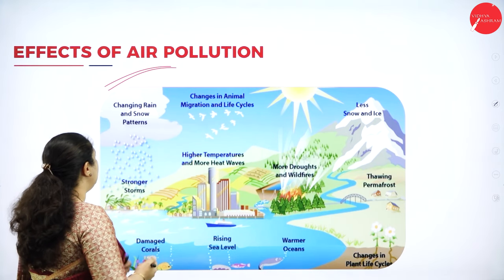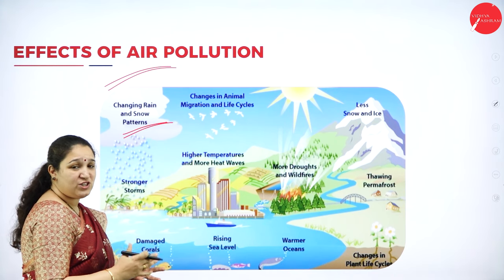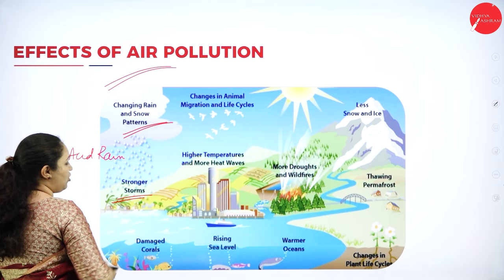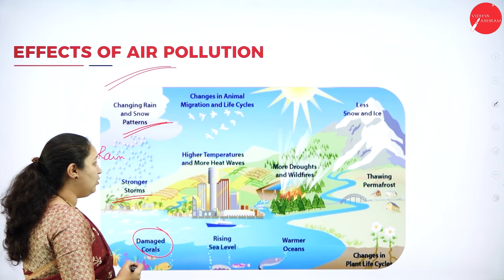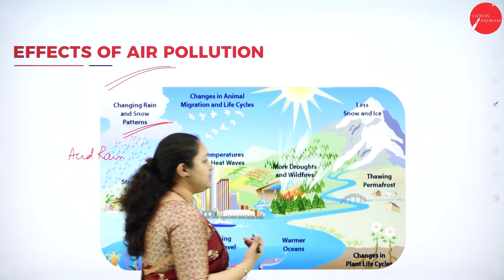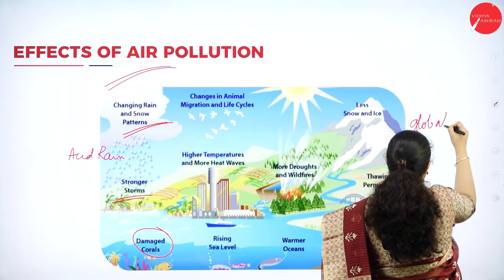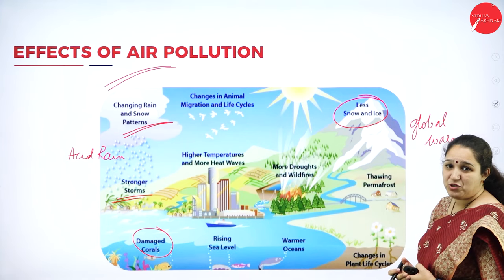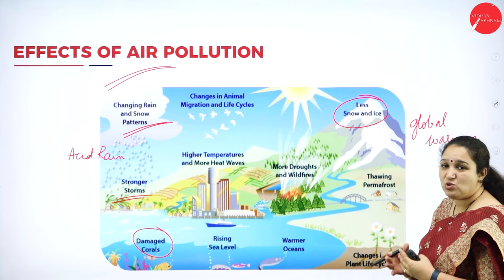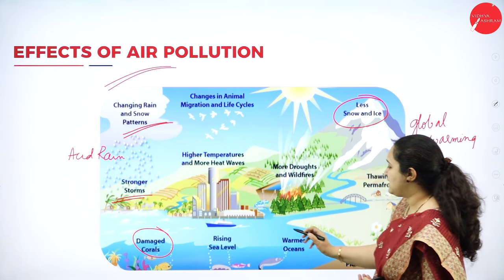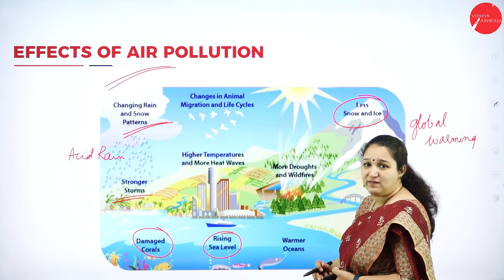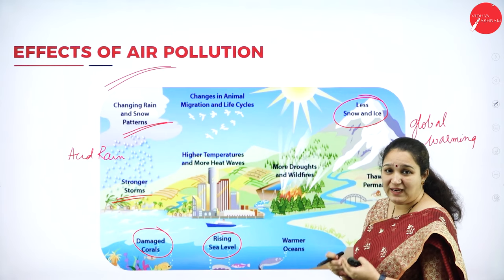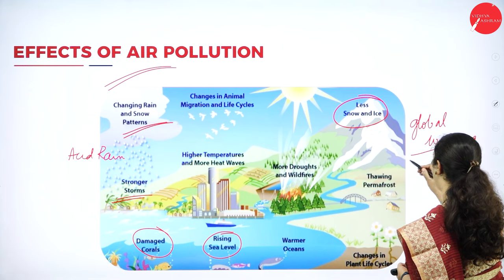Other effects of air pollution include changing rain and snow patterns, and the rain pH can reduce to cause acid rain. There can be stronger storms, and acid rain can damage corals. Carbon dioxide and other gases increase global warming, which raises the temperature of the earth. Glaciers and snow start melting, giving rise to rising sea levels. Rising sea levels mean land gets submerged, leaving very little land for the population.